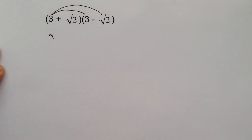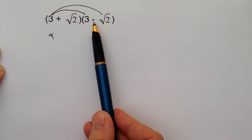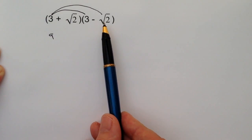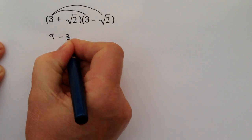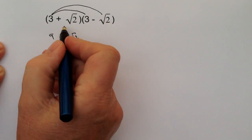Then I've got three times minus root two. Be very careful - you need to make sure that you take into account any of the negative or minus signs in these types of questions. So three times minus root two is minus three root two.